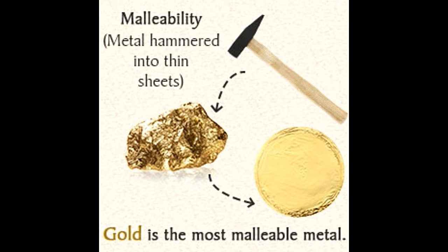Malleability defines how every element reacts under pressure. Every element has unique properties and structures. While some are brittle, others can be easily shaped into a desired figure. Whenever physical changes are done to metals, like force or pressure is applied to them, they get distorted. In other words, the dimensions or the shape of the object is changed.